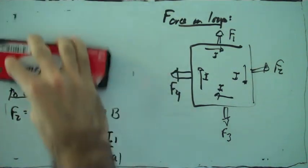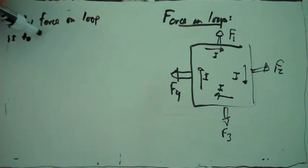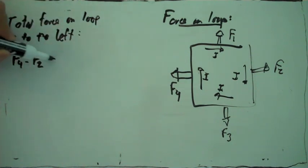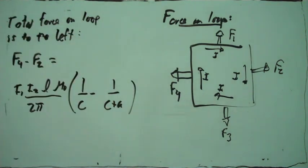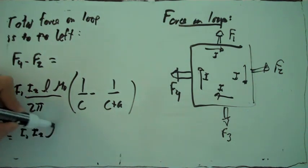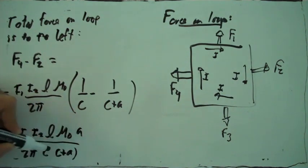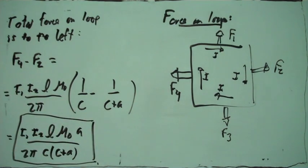So now we have F2 and F4. The total force on the rectangle is just the sum of those two forces, which are in different directions. The total force points to the left, and it's F4 minus F2 — we just subtract these two terms. This can also be written in a simplified form, and that's the total force on the rectangular loop.